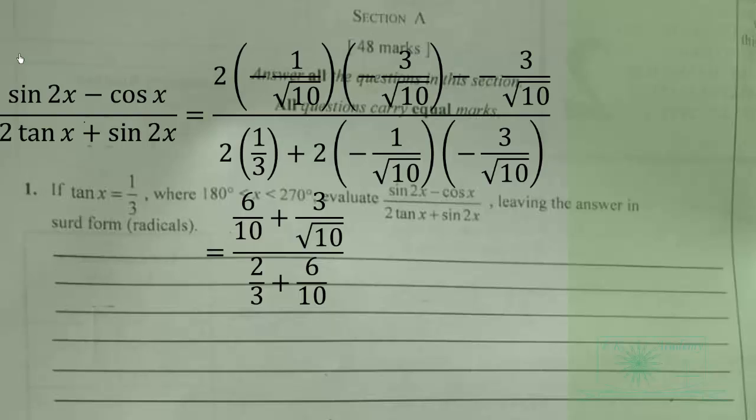So we have 6 over 10, as we can see here. Then we have negative negative being positive, so we have plus 3 over 10.